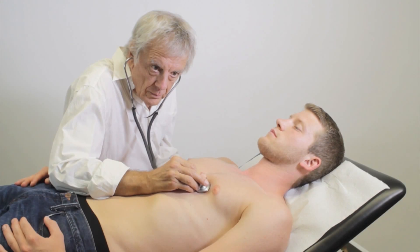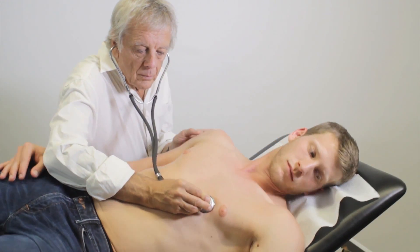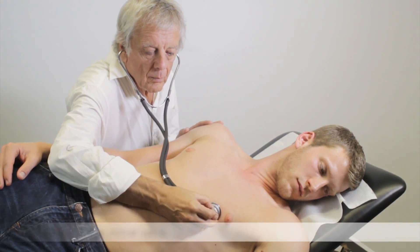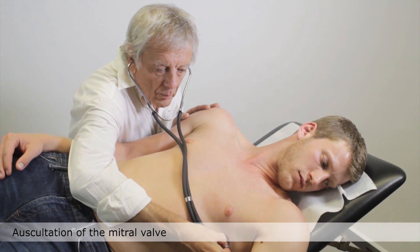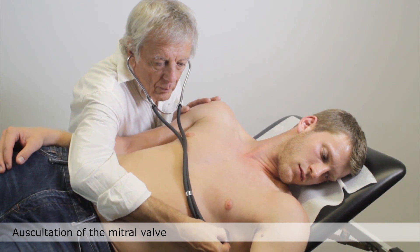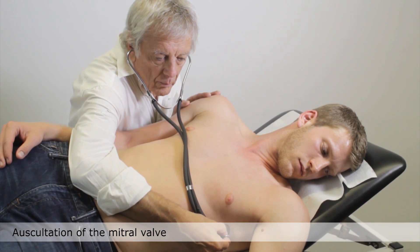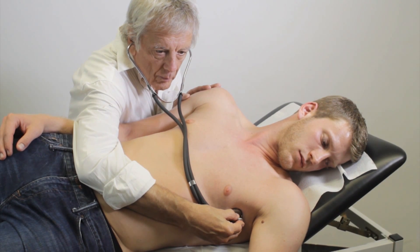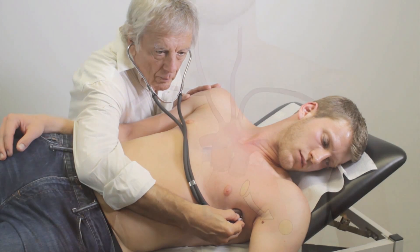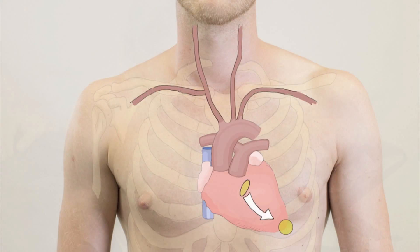Auscultation of the mitral valve is best performed with the patient in the left lateral decubitus position. Mitral valve murmurs radiate to the fifth left ICS at the level of the anterior axillary line.